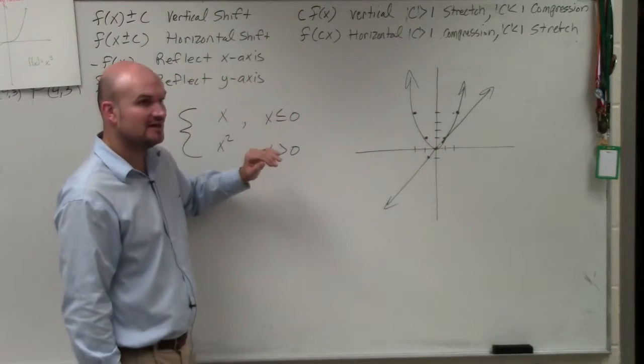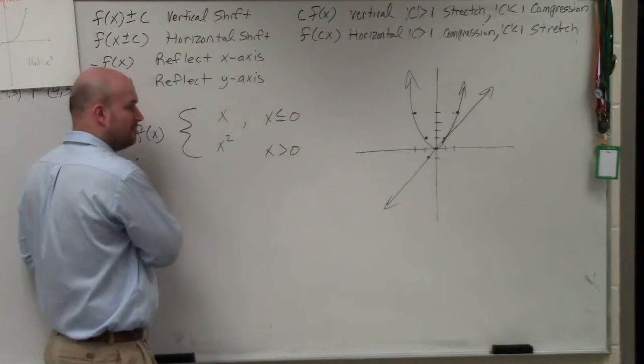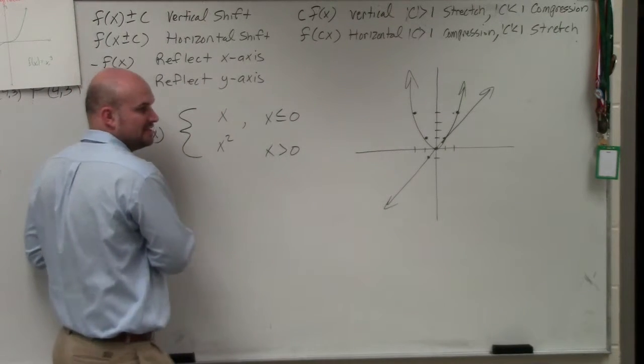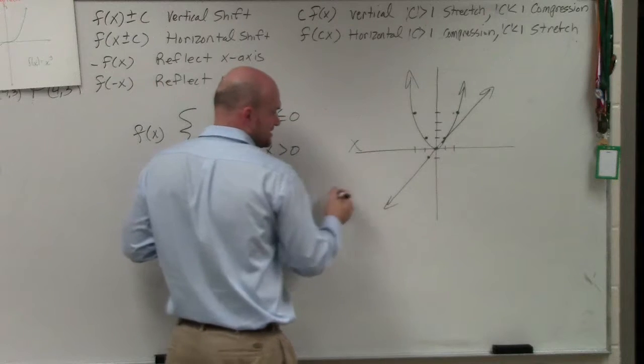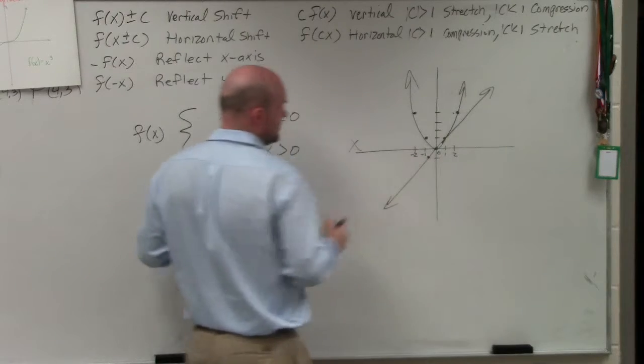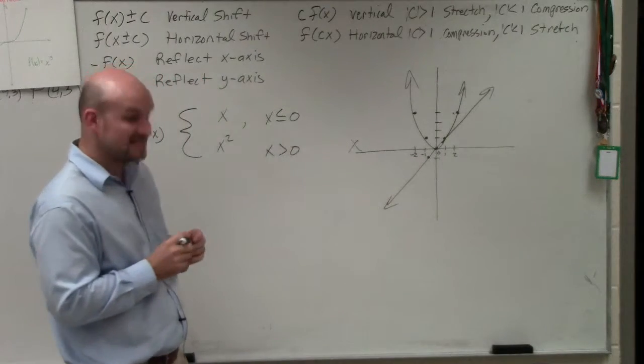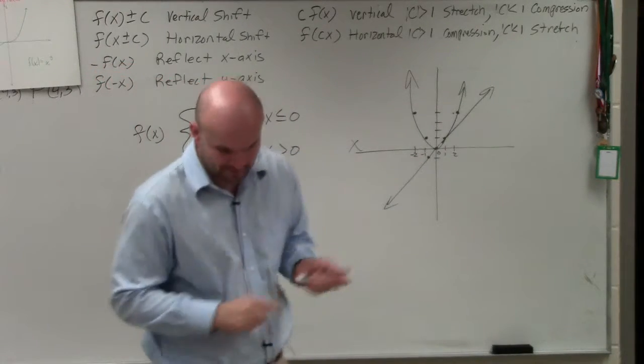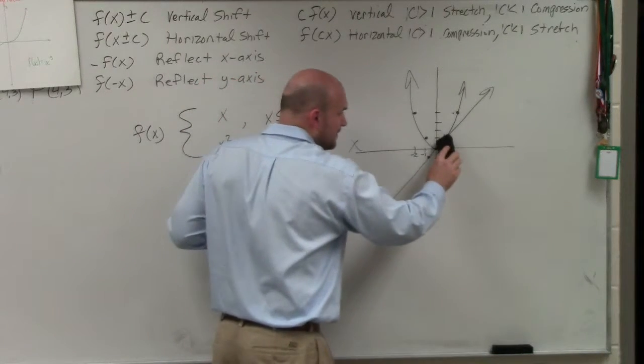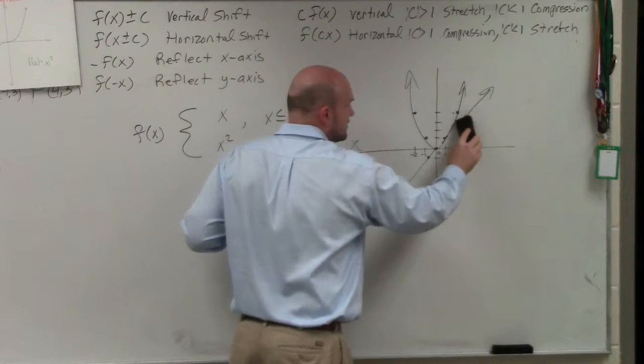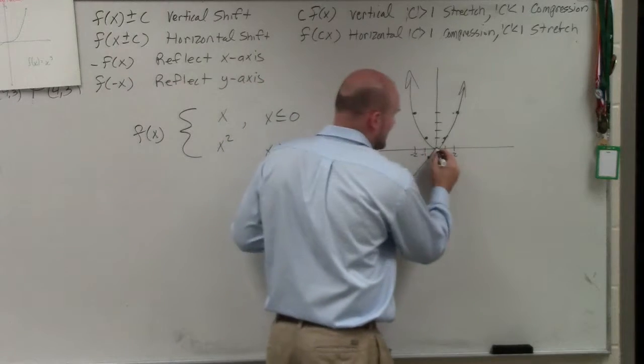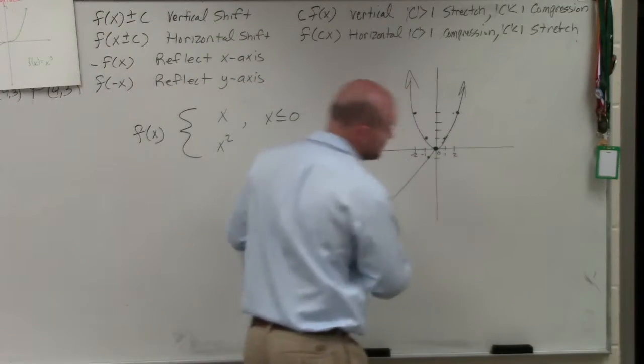What the piecewise function says is I want you to graph them, but I only want you to graph this graph for values of x that are less than or equal to 0. So here's the x-axis. Here's 1, 2, 0, negative 1, negative 2. So for the values that are all less than or equal to 0, it's only going to be from 0 over here. That means the rest of this line I am going to erase. I'm only graphing for the x values of that function that were less than 0.